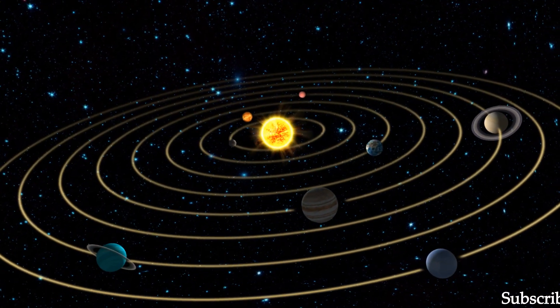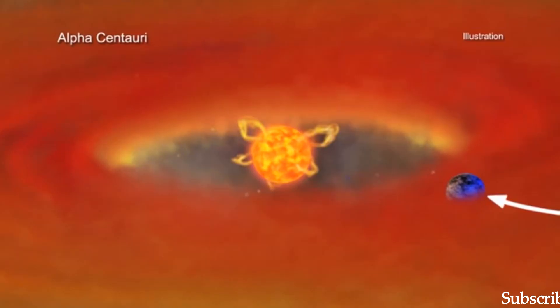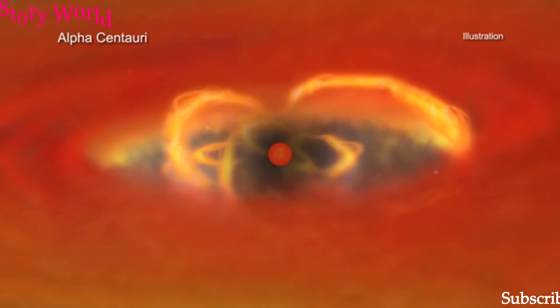Other than the sun, Alpha Centauri is the closest star system to the Earth.